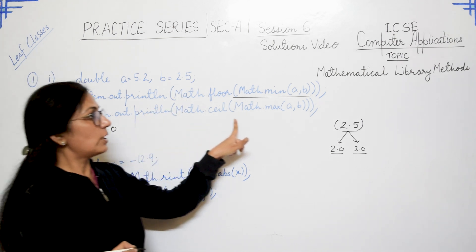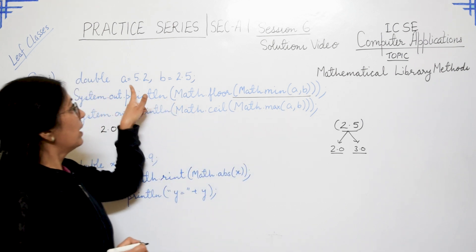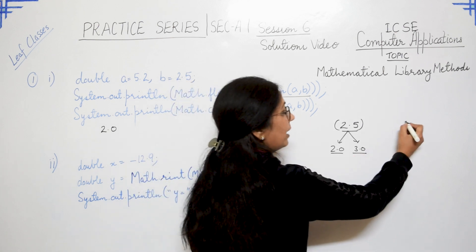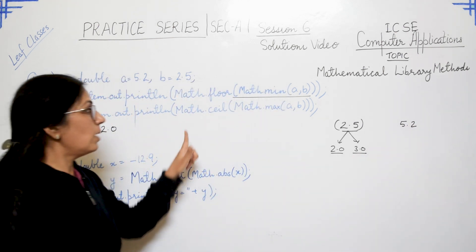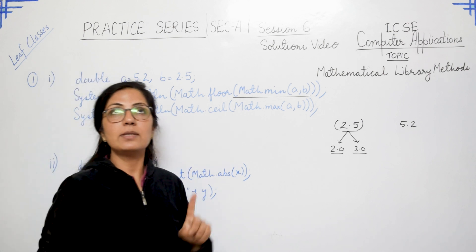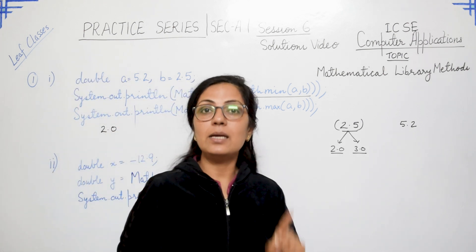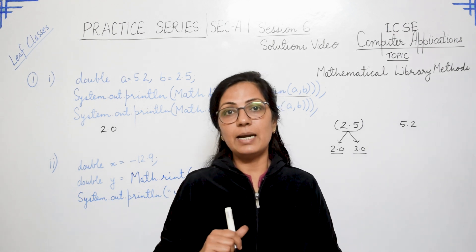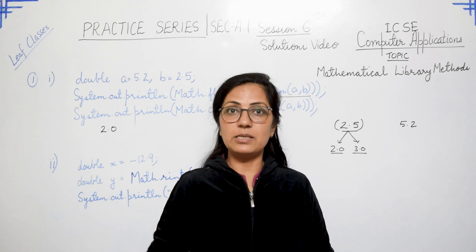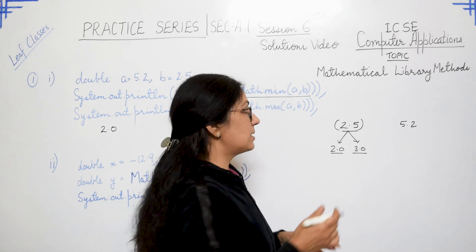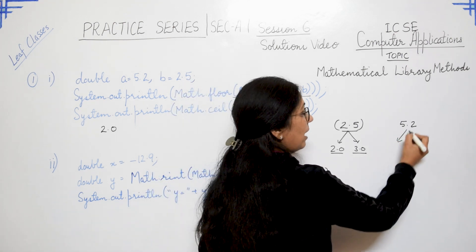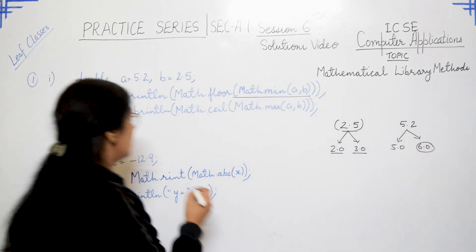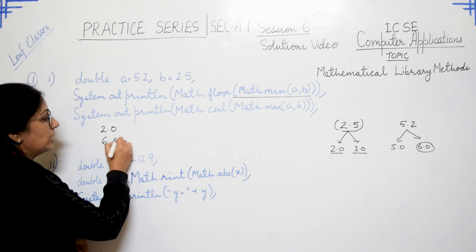The second function is Math.ceil(Math.max(a, b)). Math.max(5.2, 2.5) — the maximum value is 5.2. The ceil function gives the nearest highest integer in double form. Ceil means up, floor means down. So for 5.2, the nearest integers are 5.0 and 6.0, and the nearest highest is 6.0. So the answer will be 6.0.